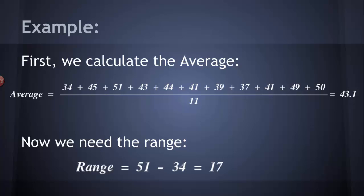Now we need the range. The range is the difference between the largest and the smallest value. The largest value in this guessing data set was 51. The smallest value that was guessed was 34. The difference between 51 and 34 is 17.